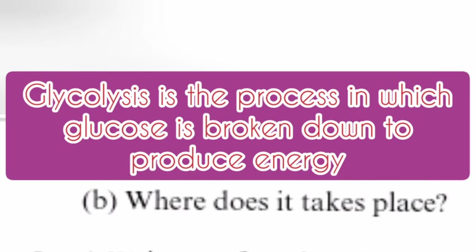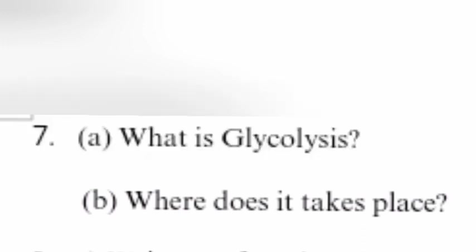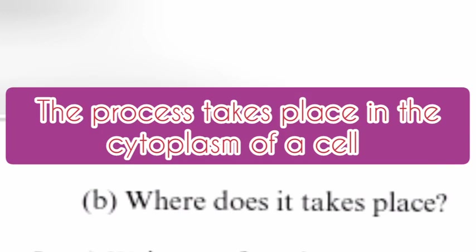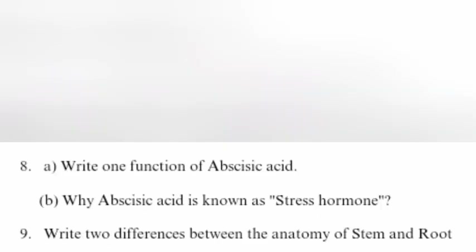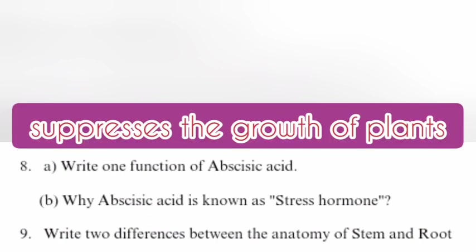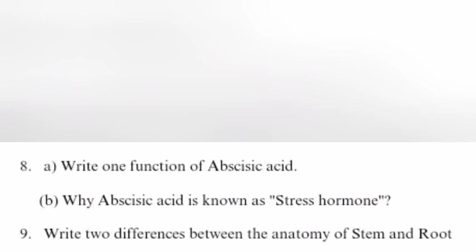Question 7B: Where does glycolysis take place? Answer: The process takes place in the cytoplasm of a cell. Question 8A: Write one function of abscisic acid. Answer: It suppresses the growth of plants.